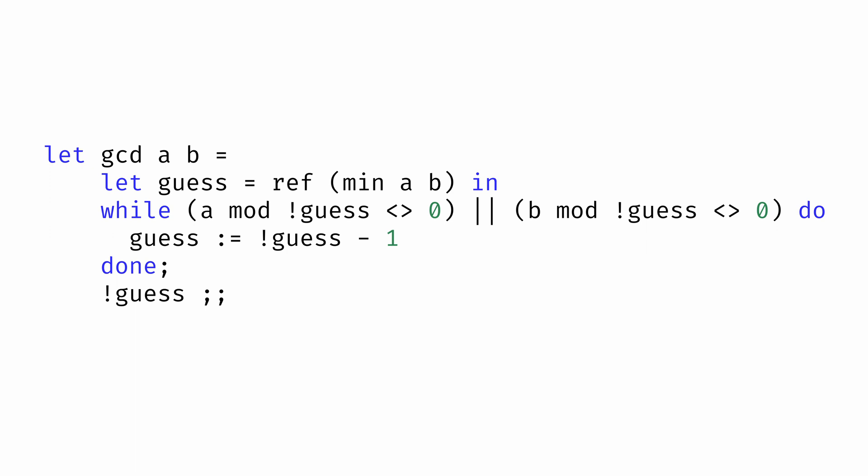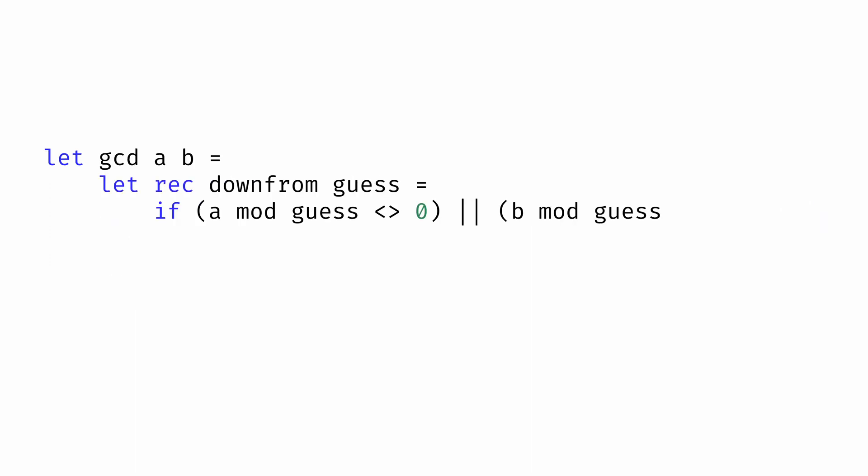But we could also write this same algorithm in a different style, this time using functional programming. Here's the same approach written in a functional style. Inside our function, we're defining a new function called downFrom.